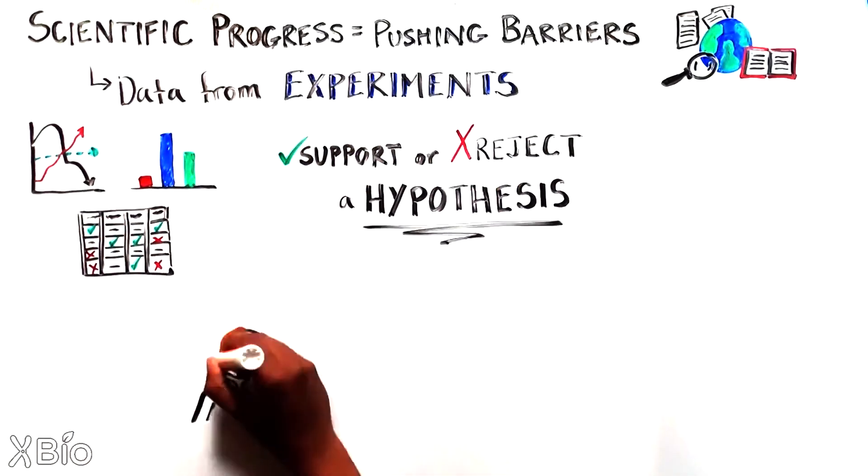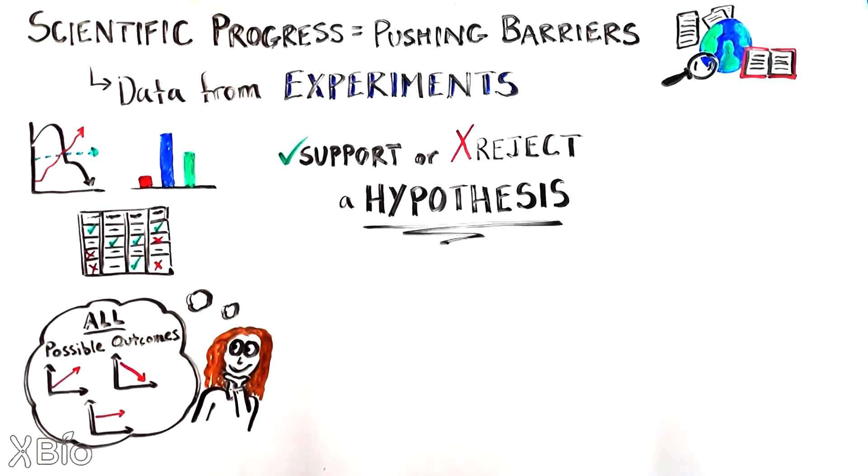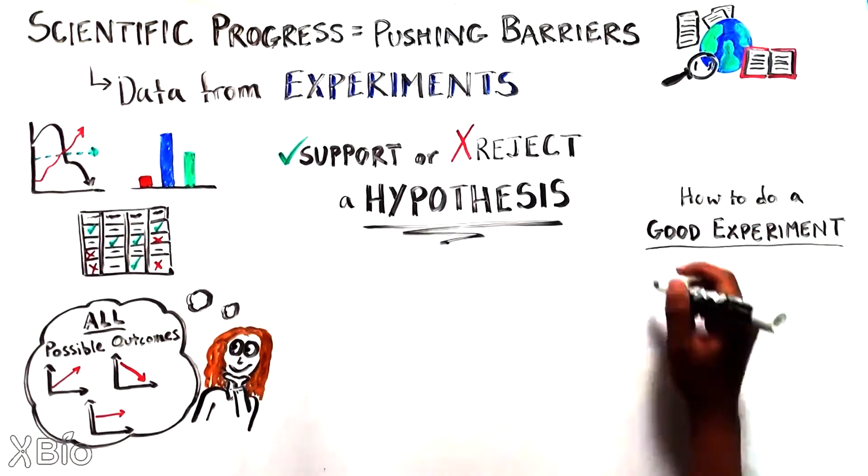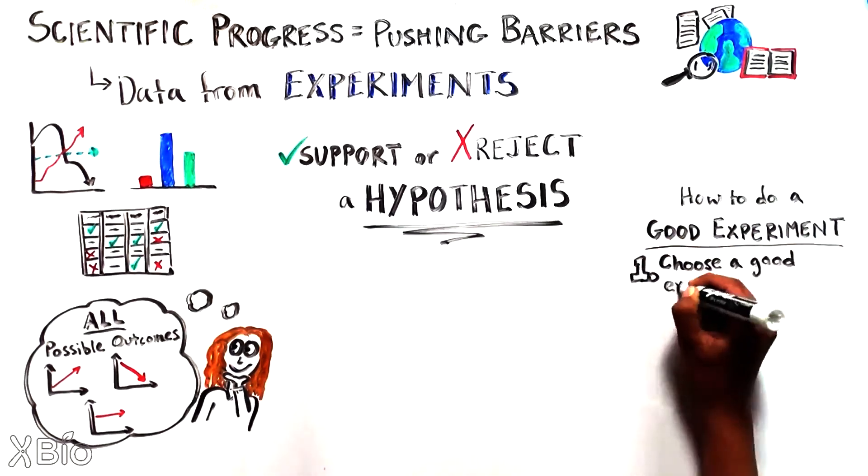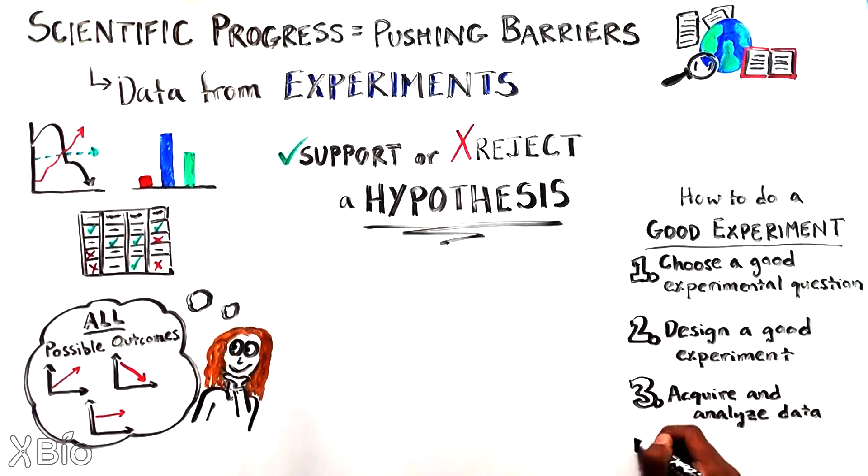Before you begin an experiment, you have to think through the possible outcomes and what they might mean. However, these new discoveries are only meaningful if we make sure we do a good experiment. Let's talk about how to choose a good experimental question, design a good experiment, acquire and analyze the data properly, and why repetition is so important.